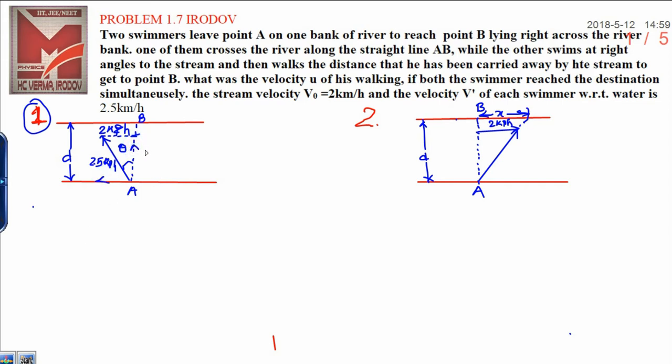Now I will resolve this component into two parts: that will be 2.5 cos θ and this is 2.5 sin θ. Let us see this triangle over here. In this triangle, this is θ, this is 2, and this is 2.5. Now the angle can be calculated.